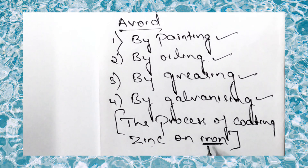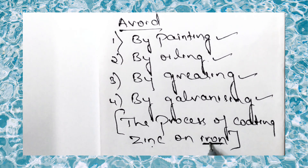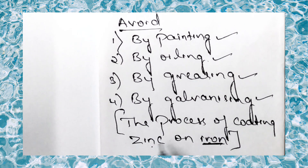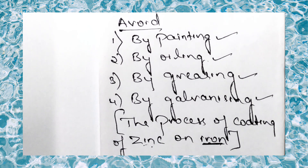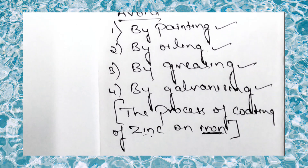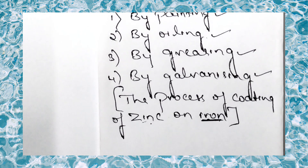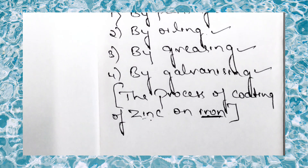The process of coating zinc on iron is called galvanization. Because zinc is more reactive than iron, it protects the iron from corrosion.